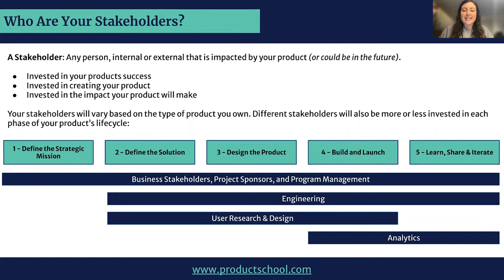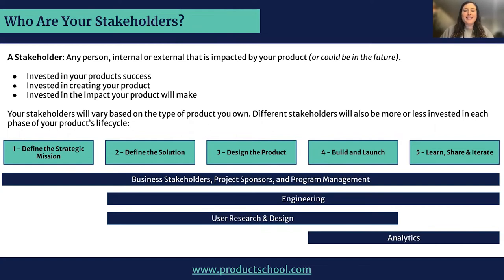Thinking about different types of stakeholders: business stakeholders and project sponsors want to be involved at every stage, especially upfront when you're defining business strategy and metrics. Program managers are executionists helping you at every stage and pushing things along. Engineers, user research, and design partners work most closely with you on the MVP, figuring out the exact UX, edge cases, and testing — so they're super involved in the middle phases. Analytics partners help build your success metrics, set up A/B tests, look at learnings, and provide analyses to help you decide how to iterate further. All these stakeholders have different involvement and interactions, and they also vary based on the type of product you own.